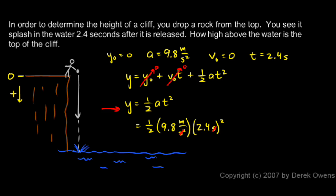Which is what we would expect for the distance. So we just do the math. ½ times 9.8 times 2.4 squared comes out to 28 meters.